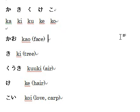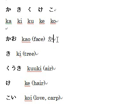Let's practice how to type 'kao.' Please change IME to hiragana. Then you type K, A — that gives you 'ka.' Then O is just O. So it's 'kao.' We have a kanji for face — just press the space key and it comes up as 'kao.'